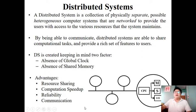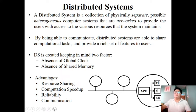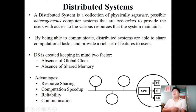The next advantage is reliability, meaning your system continues to execute even if some systems fail. For example, if one system fails due to a network issue, the other systems still continue to perform tasks, increasing overall reliability. The final advantage is communication — people located at different geographical locations can easily share information with each other without moving from one place to another, saving time as well.